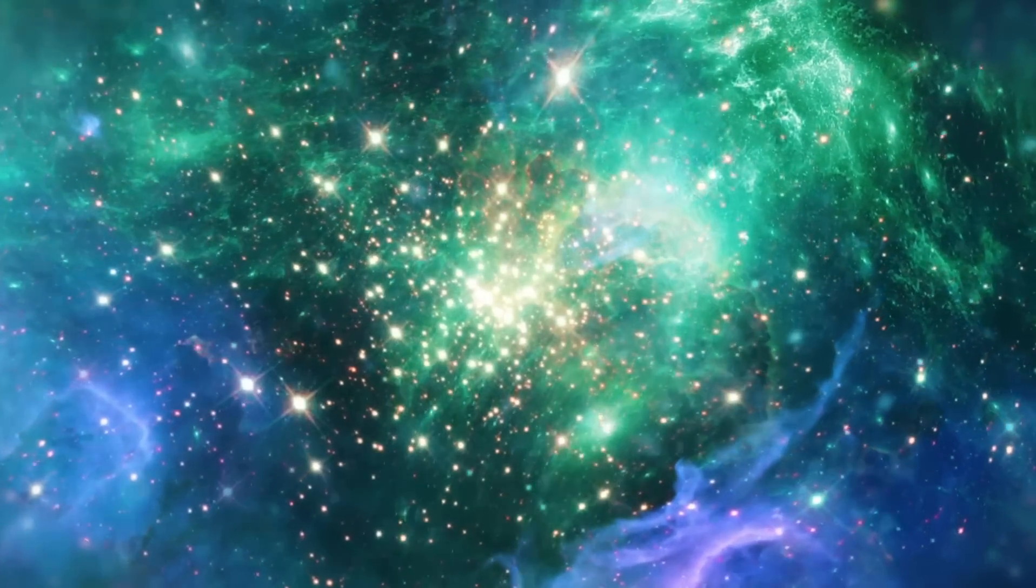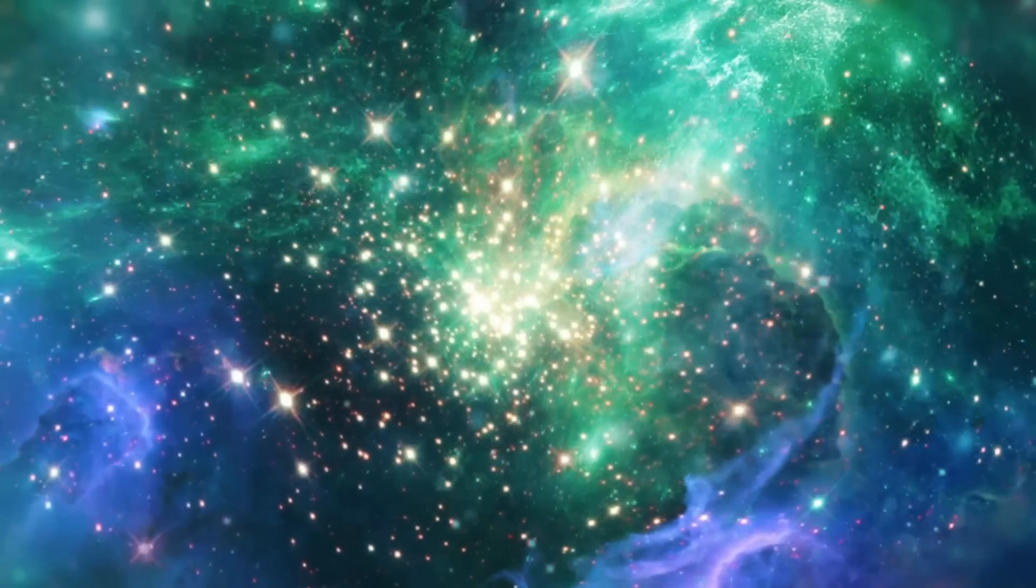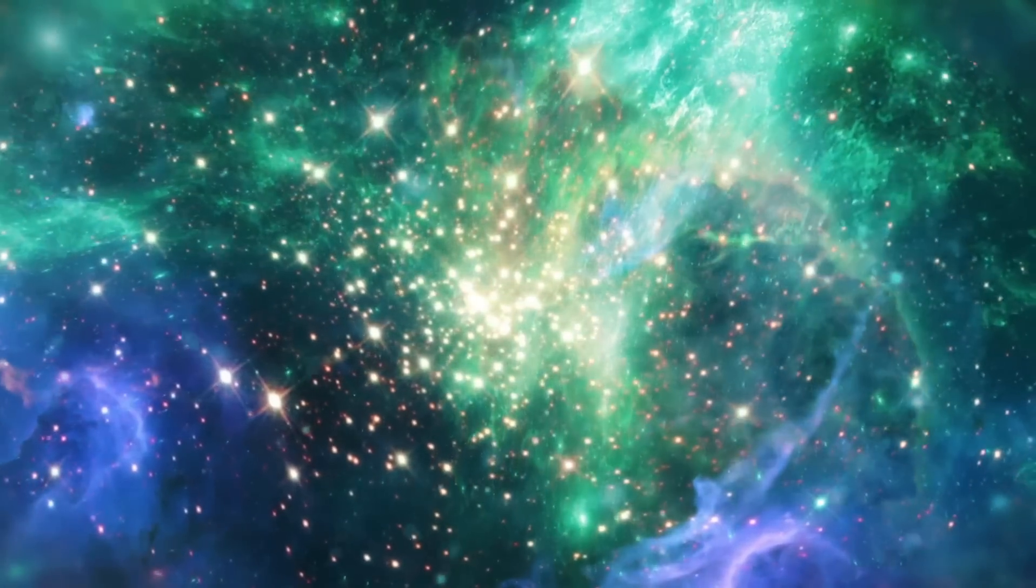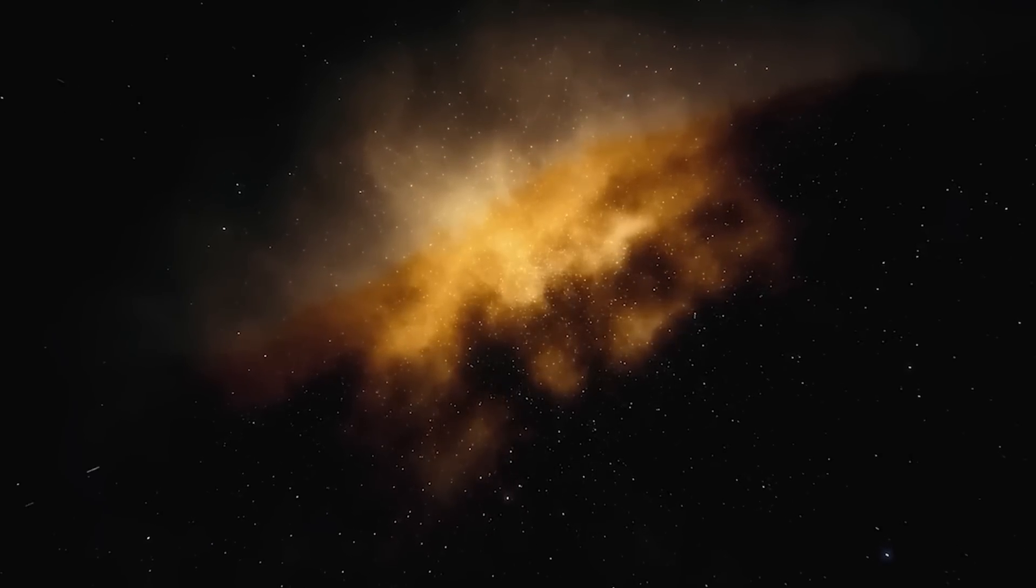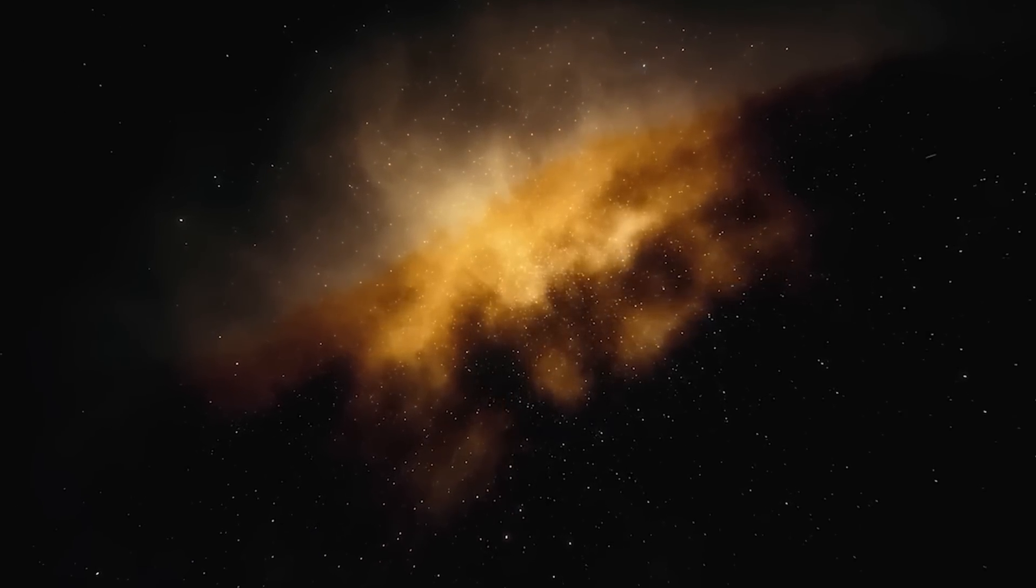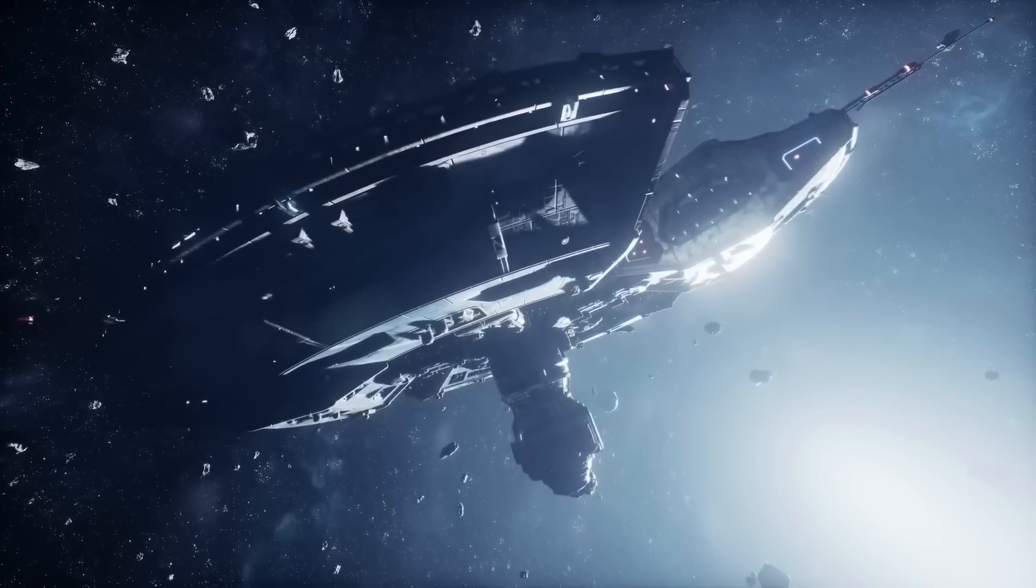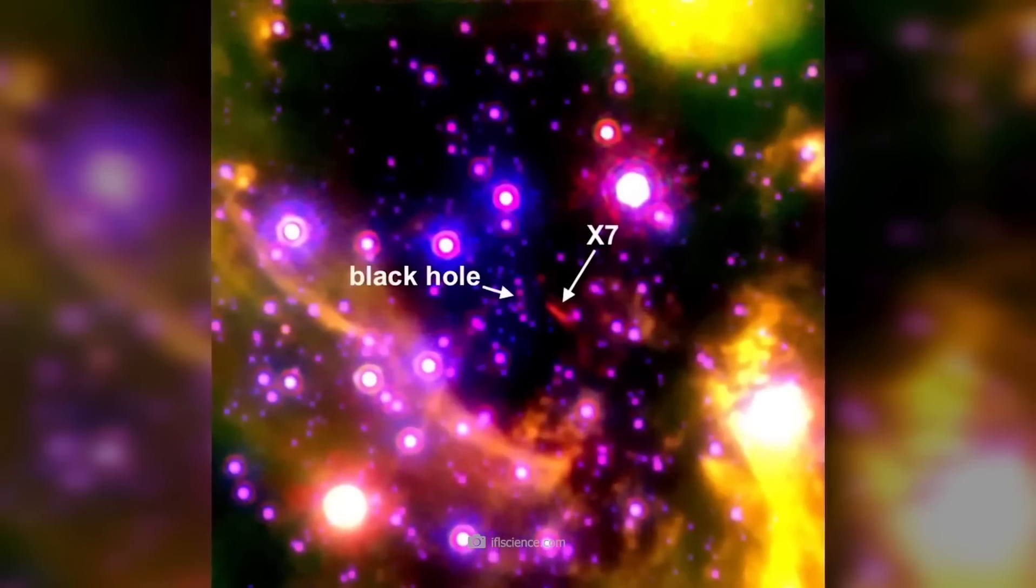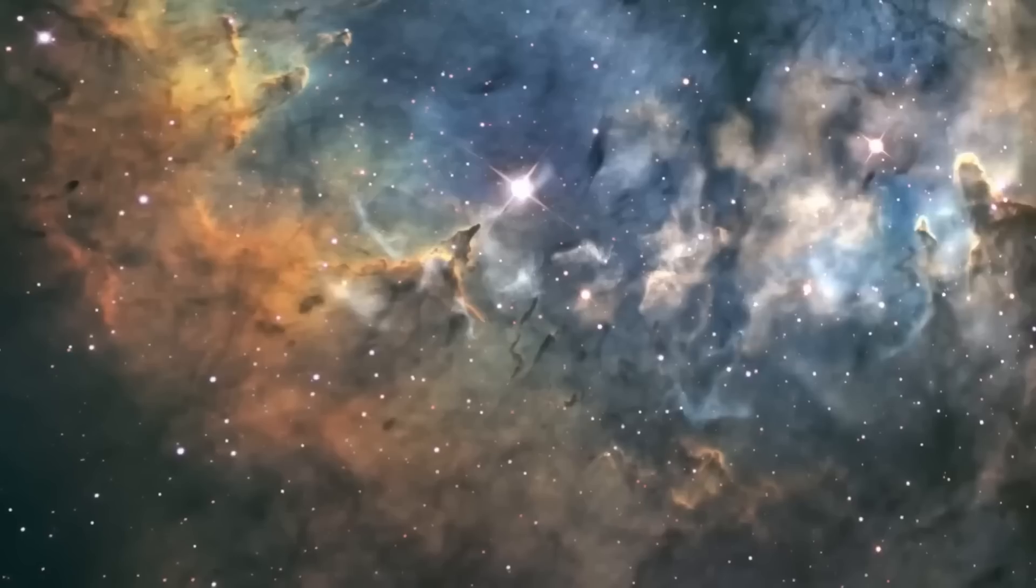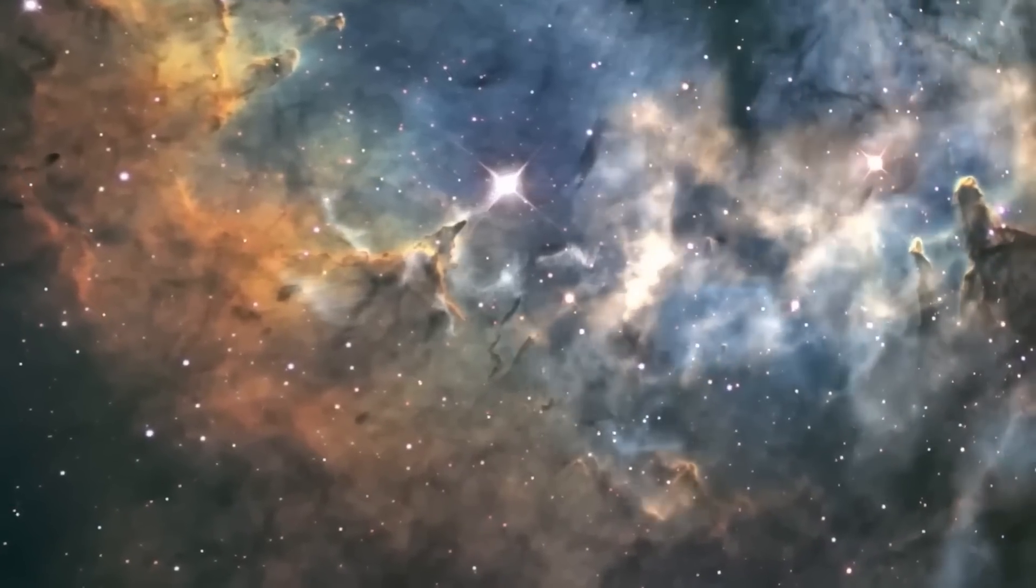But that's not all. Scientists also found something mind-boggling. These galaxies are as mature as our 13-billion-year-old Milky Way galaxy. The mass of stars within each of these objects totals several billion times larger than that of our Sun, according to the research. One of them in particular might be as much as 100 billion times our Sun's mass. For comparison, the Milky Way contains a mass of stars equivalent to roughly 60 billion suns.